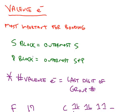So the rule is we're going to look at just elements in the S and the P blocks of the periodic table. If you have an element in the S block, the valence electrons are the outermost S, and in the P block, it's the outermost S and the outermost P.